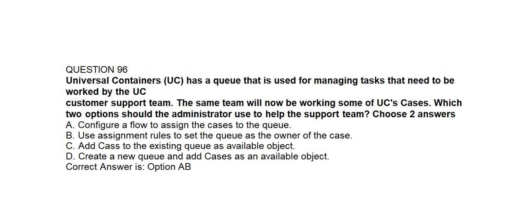Question number ninety-six. Universal Containers has a queue that is used for managing tasks that need to be worked by the UC customer support team. The same team will now be working some of UC's cases. Which two options should the administrator use to help the support team? Option A: Configure a flow to assign the case to the queue. Option B: Use assignment rules to set the queue as the owner of the case. Option C: Add case to the existing queue as available object. Option D: Create a new queue and add cases as an available object. Correct answer is Option A and Option B.